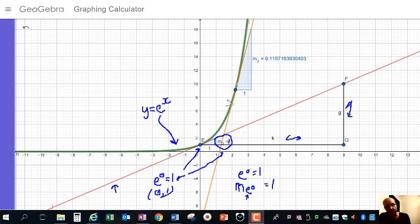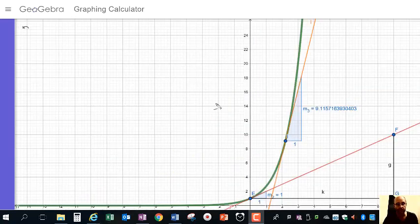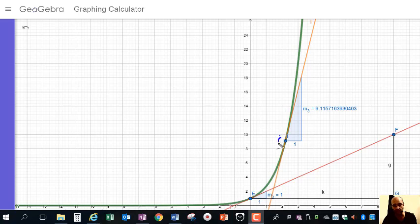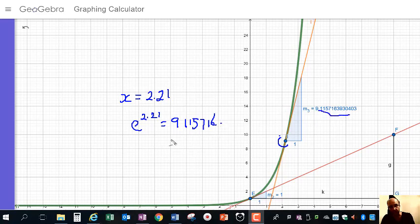So let's look at another number up here. At this point, we've got x at a completely different, randomly chosen value. We've got x at 2.21. So we would have e to the 2.21. Join in and verify these calculations with me, and you get 9.1157, et cetera. And notice that that's also the gradient. So the value for y and the value for the gradient are the same.